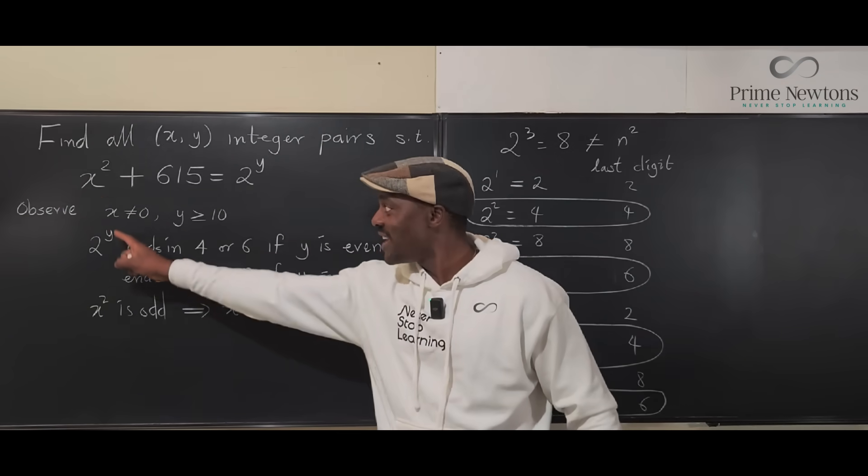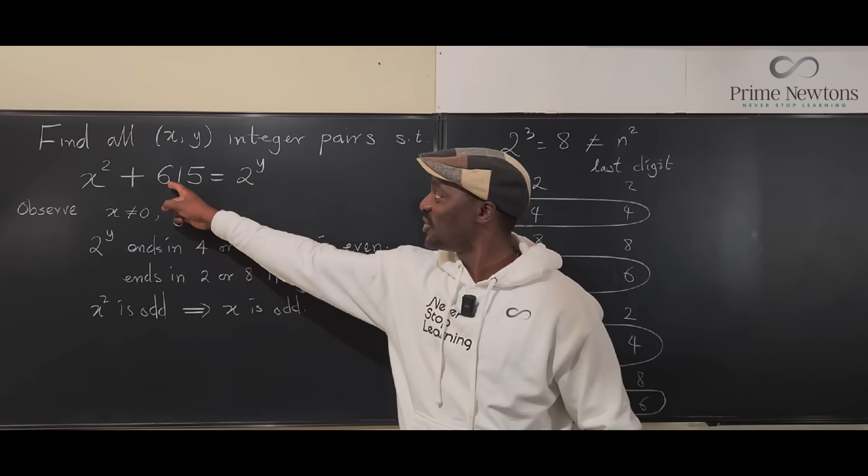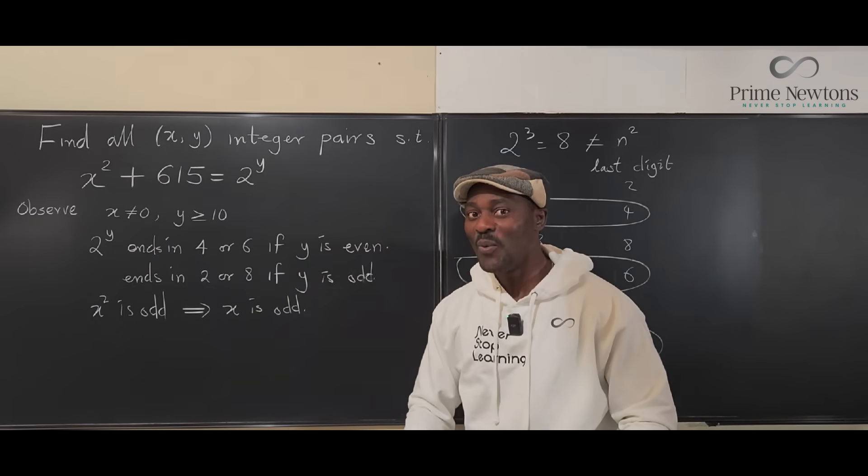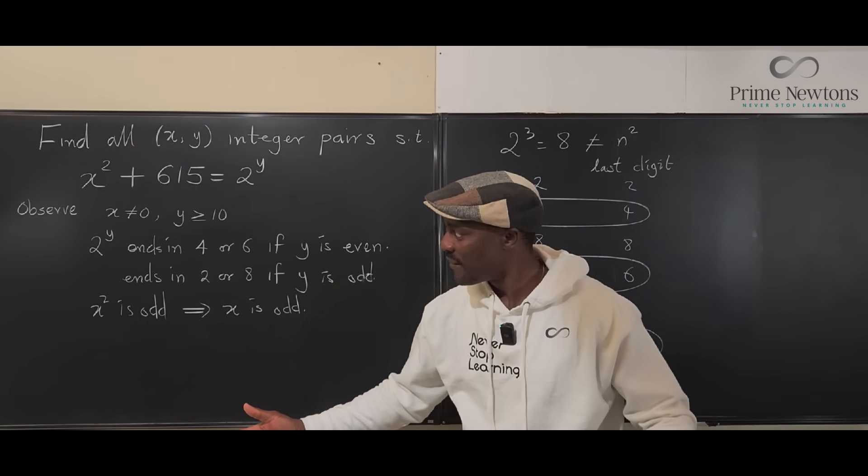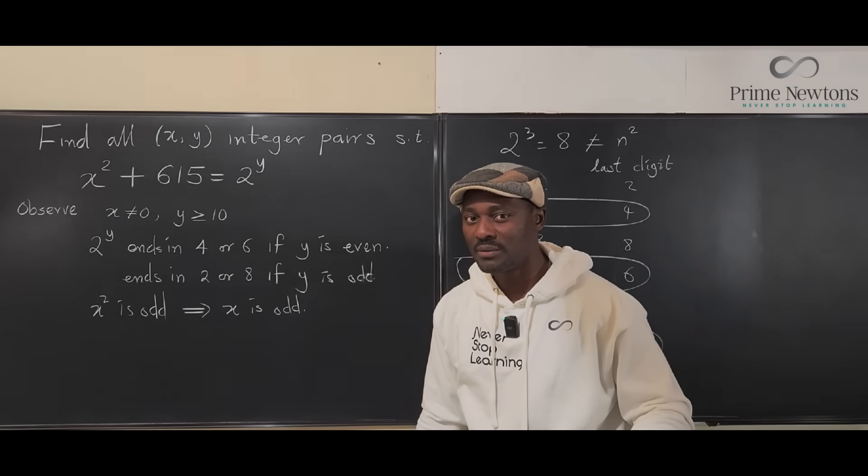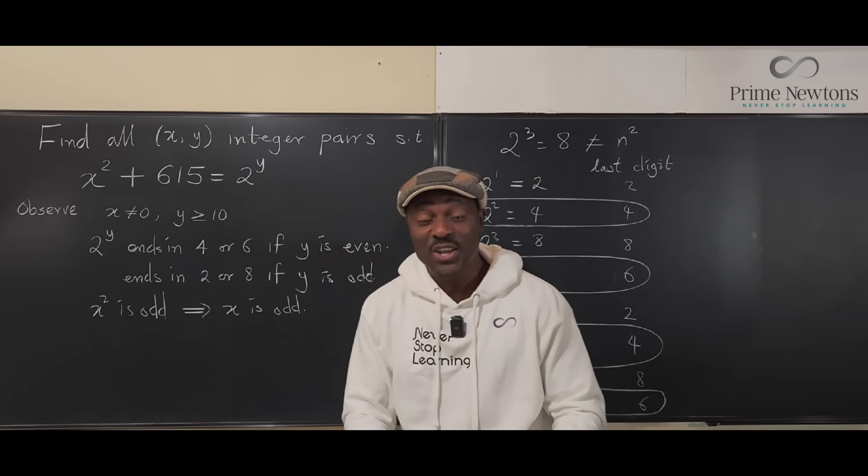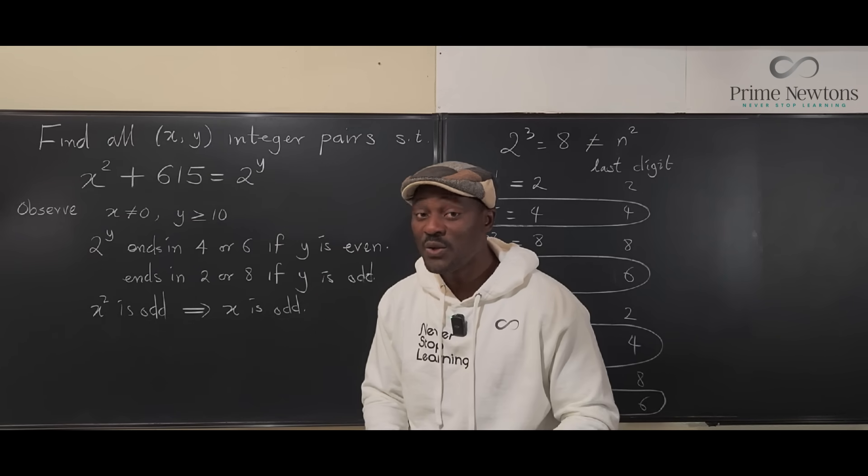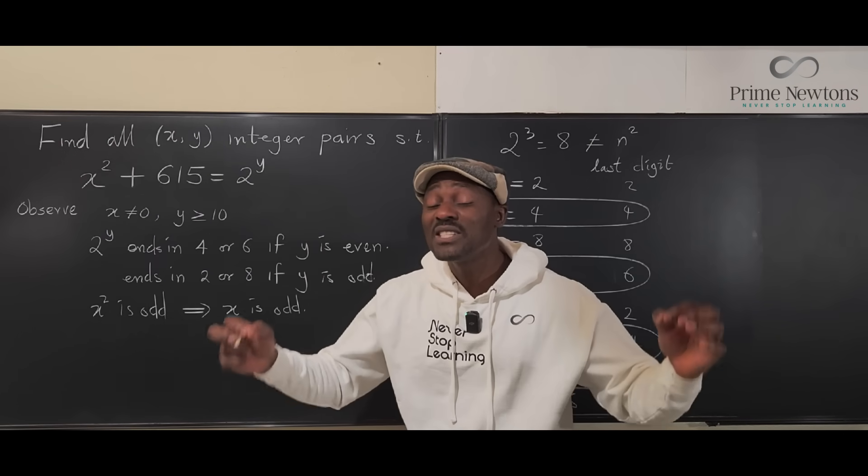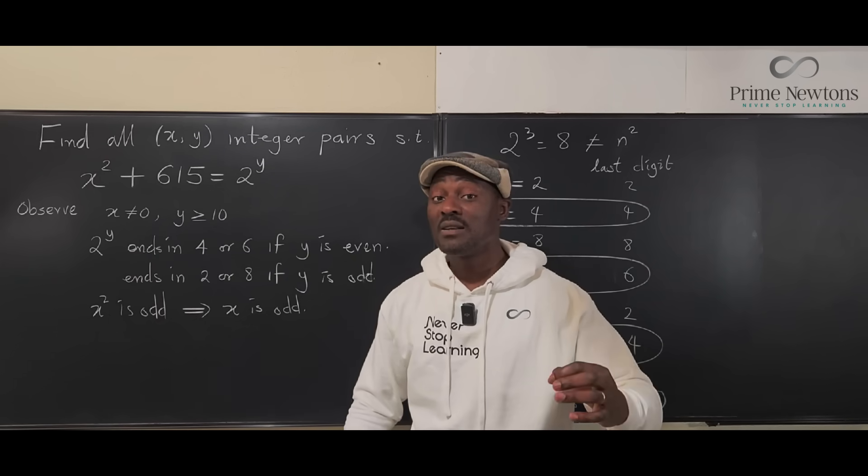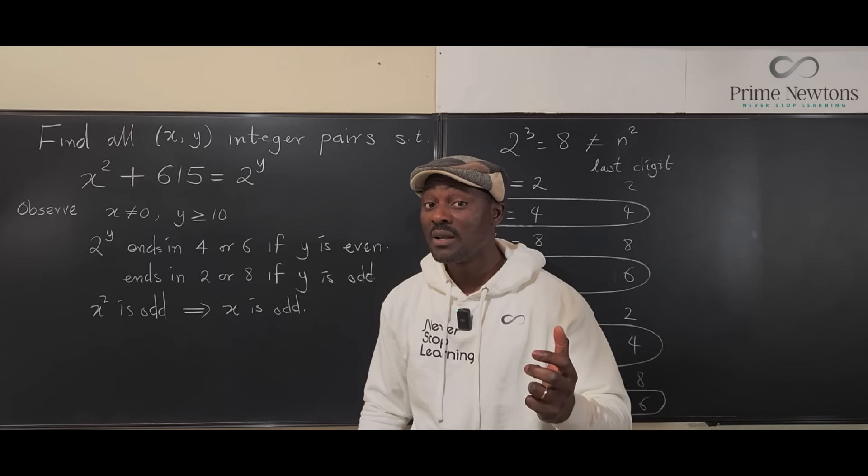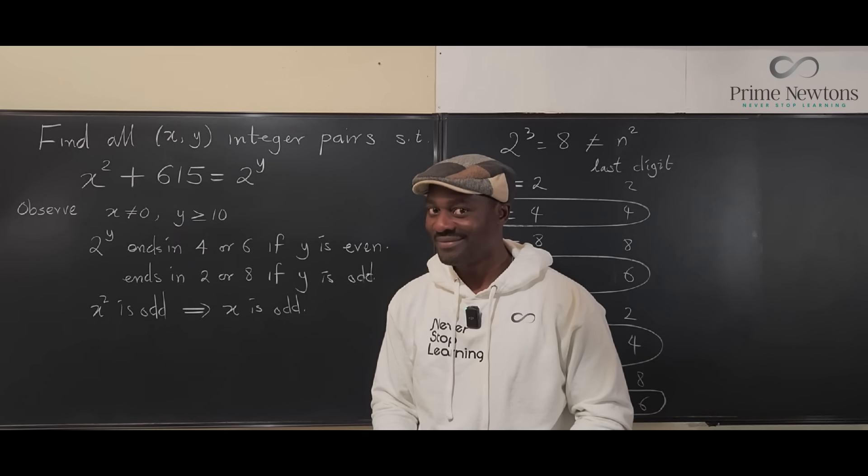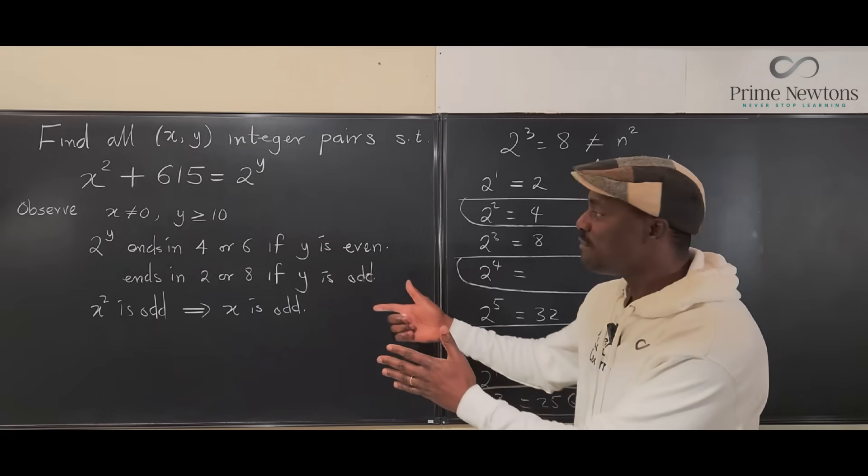Now, we are squaring x and we're adding it to 615. What do you think? I didn't know this until today when I was trying to solve this problem. What happens when you square any odd number? The fact is, the last digit of any odd number squared is either 1, 9, or 5. Those are the possible options. Every single odd number in existence, when squared, their squares end in 1, 9, or 5.